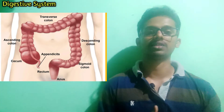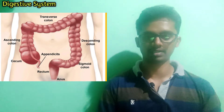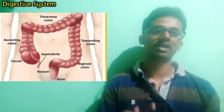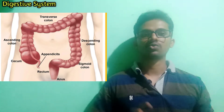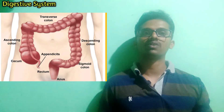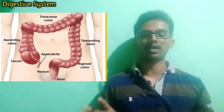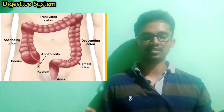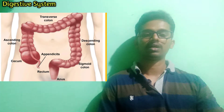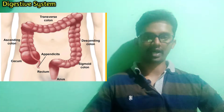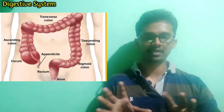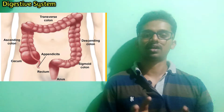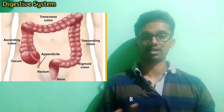In the anal canal, an anal sphincter muscle is present which helps in the defecation process. This completes the overall anatomy of the parts of the digestive system — covering the alimentary canal and all its parts.